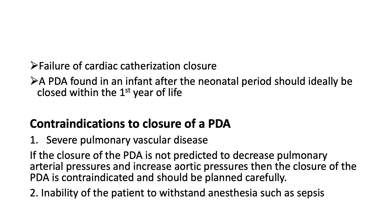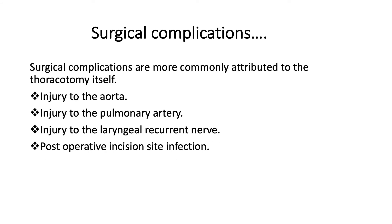A PDA found in an infant after the neonatal period should ideally be closed within the first year of life. Contraindications to closure include severe pulmonary vascular disease — if closure is not predicted to decrease pulmonary arterial pressure and increase aortic pressure, closure is contraindicated. The second contraindication is inability of the patient to withstand anesthesia, such as in sepsis. Surgical complications are commonly attributed to the thoracotomy itself: injury to the aorta, pulmonary artery, and the recurrent laryngeal nerve, as well as post-operative site infection.